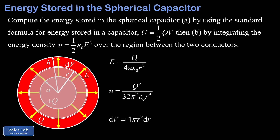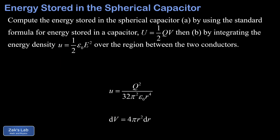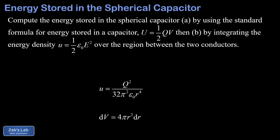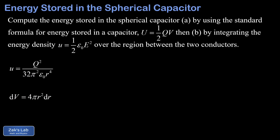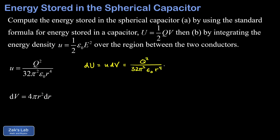We multiply the energy density u by the volume dV of each thin shell to get the energy in that shell. The surface area of a spherical shell is 4πr², so dV = 4πr² dr. Plugging everything in: dU = u × dV = [Q² / (32π²ε₀r⁴)] × 4πr² dr. Simplifying, a factor of 4 cancels leaving 8 in the denominator, one π cancels, and two powers of r cancel, giving dU = Q² dr / (8πε₀r²).